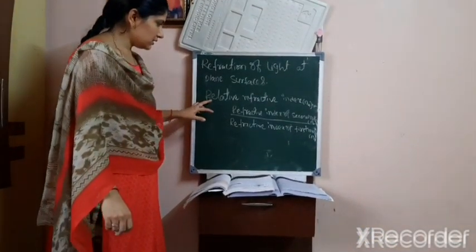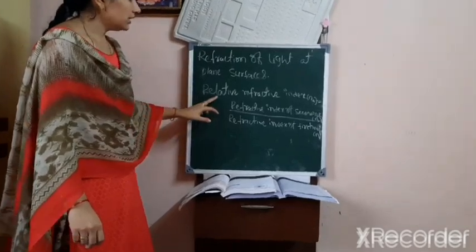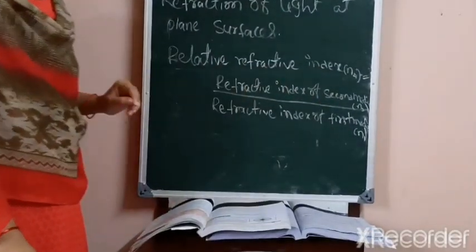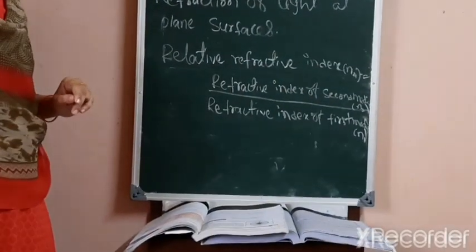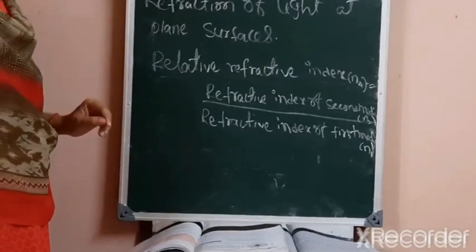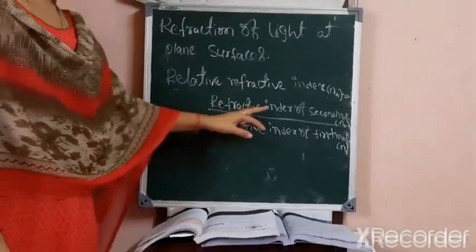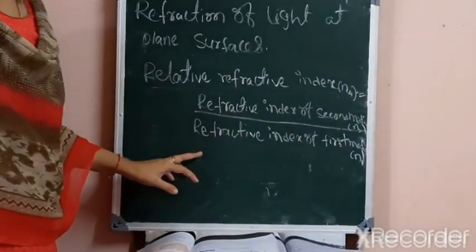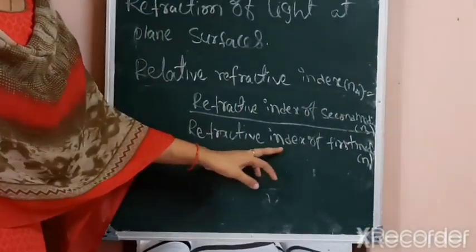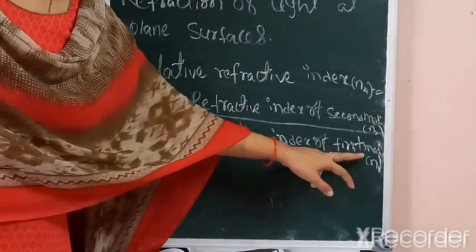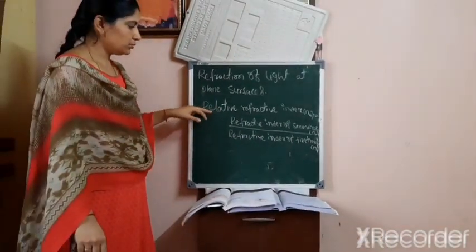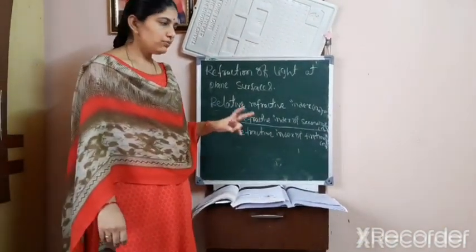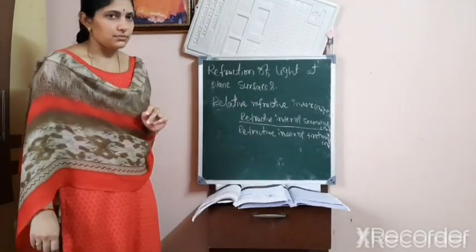Now we discuss the third point: relative refractive index. What is relative refractive index? It is the refractive index of the second medium divided by the refractive index of the first medium — a comparison of two refractive indexes.